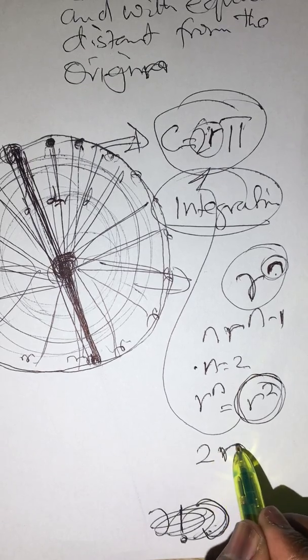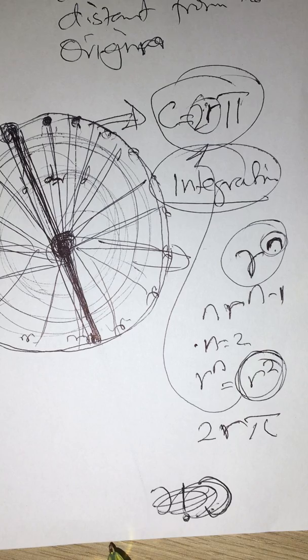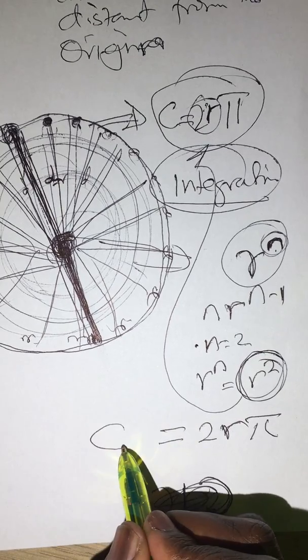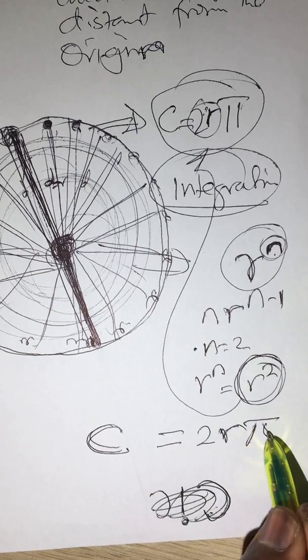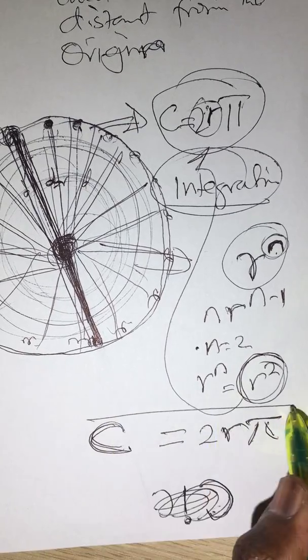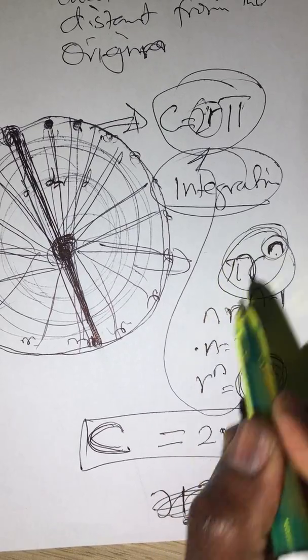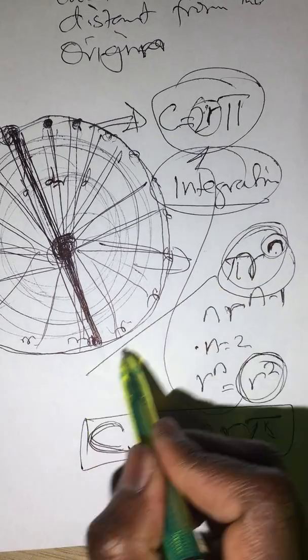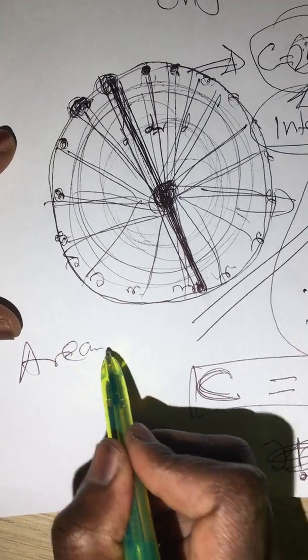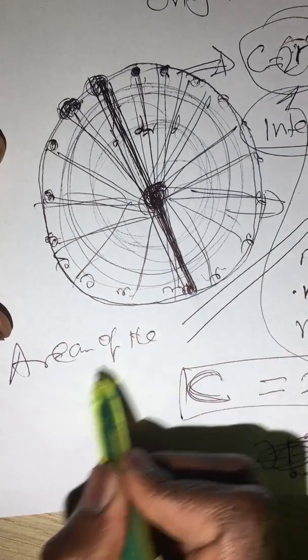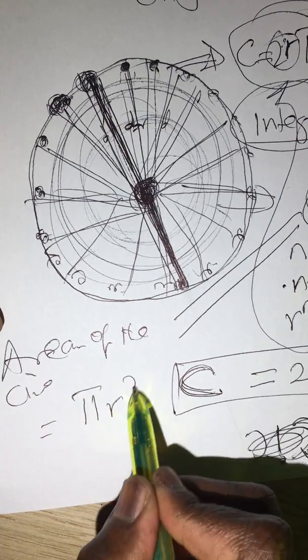Now when you get the product of the diameter of the circle and the constant pi, you get the circumference of the circle. But from here, if you include the constant there, you will get what is called the area of the circle, which is equal to pi R squared.